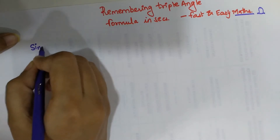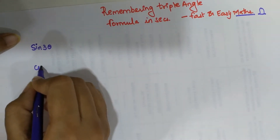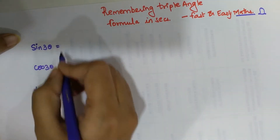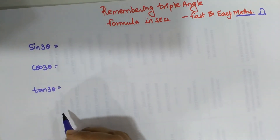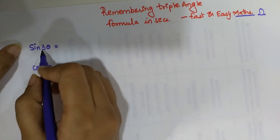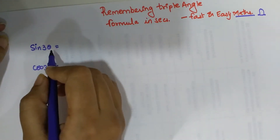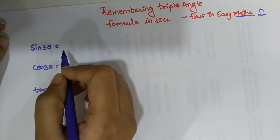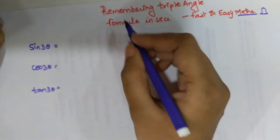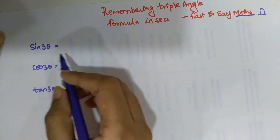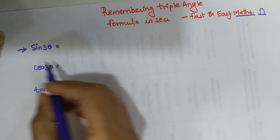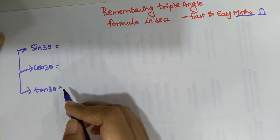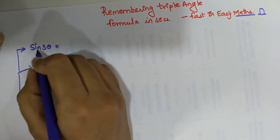The triple angle formulas are sine 3θ, cos 3θ, and tan 3θ. The trick I'm going to show you requires you to remember only one particular formula — once you remember this, finding the others is absolutely very easy.